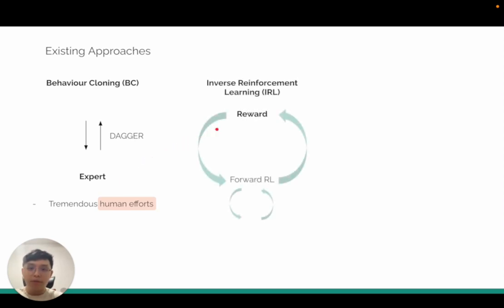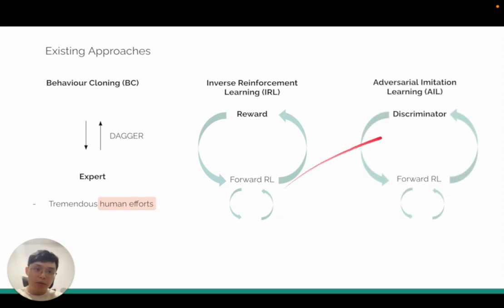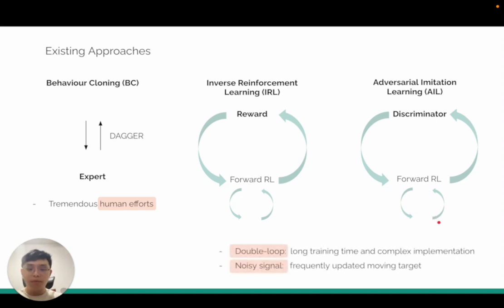Other methods such as inverse reinforcement learning have a double loop design where the outer loop learns a reward function and then uses this learned reward function to learn a forward RL agent. Another type is the Adversarial Imitation Learning where the outer loop learns a discriminator and the inner loop is a generator which serves as a policy. In both of these two types, there are two major difficulties.